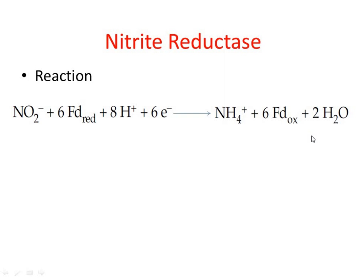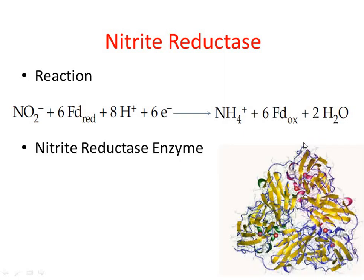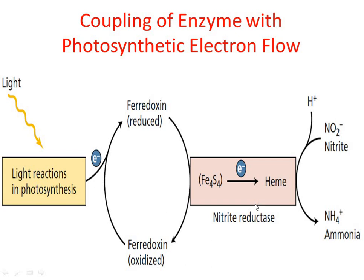Reduction of ferredoxin derives from photosynthetic electron transport in chloroplasts and from NADPH generated by the oxidative pentose phosphate pathway in non-green tissues. Chloroplasts and root plastids contain different forms of the enzyme, but both forms consist of a single polypeptide containing two prosthetic groups: an iron-sulfur cluster (Fe₄S₄) and a specialized heme. These groups act together to bind nitrite and reduce it directly to ammonium without accumulation of nitrogen compounds at intermediate oxidation states. This model shows the coupling of photosynthetic electron flow via ferredoxin to the reduction of nitrite by nitrite reductase.